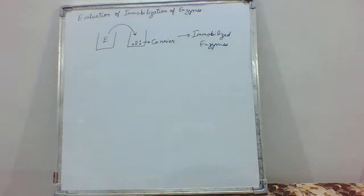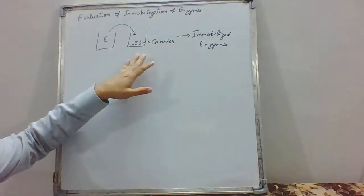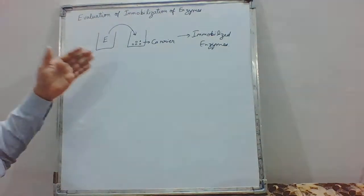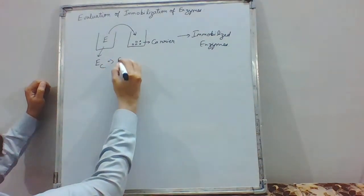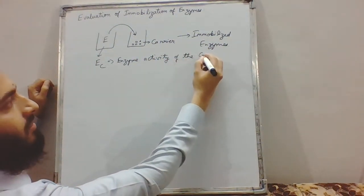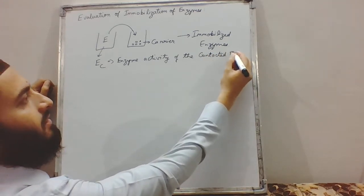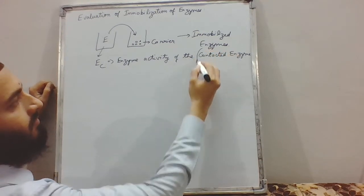Now, how to evaluate these immobilized enzymes? Since we were immobilizing our enzymes, the prime function of the enzyme was biocatalysis — the catalytic reaction. So we will study the immobilized enzyme as per its catalytic activity. We will measure the enzymatic activity in the immobilized enzyme and see how much enzyme we have provided for immobilization. We will evaluate what is the enzyme activity of the contacted enzyme.